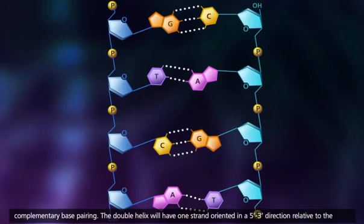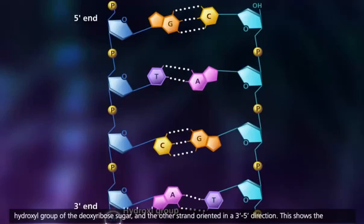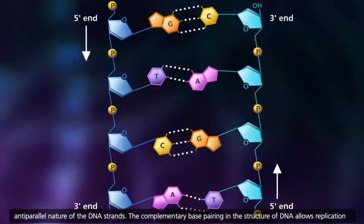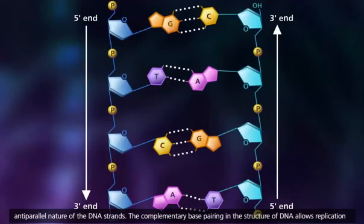The double helix will have one strand oriented in a 5' to 3' direction relative to the hydroxyl group of the deoxyribose sugar, and the other strand oriented in a 3' to 5' direction. This shows the anti-parallel nature of the DNA strands.